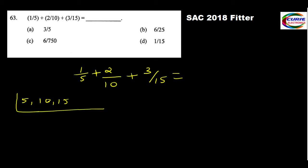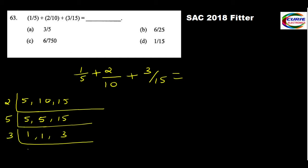Using the smallest prime number we will try to divide. With 2 we can divide: 5 stays as 5, 10 becomes 5, 15 stays as 15. Next, the smallest prime number possible is 5: dividing gives 1, 1, 3. Then dividing by 3 gives 1, 1, 1. So LCM equals 2 × 5 × 3 × 1, which comes to 30. LCM is 30.